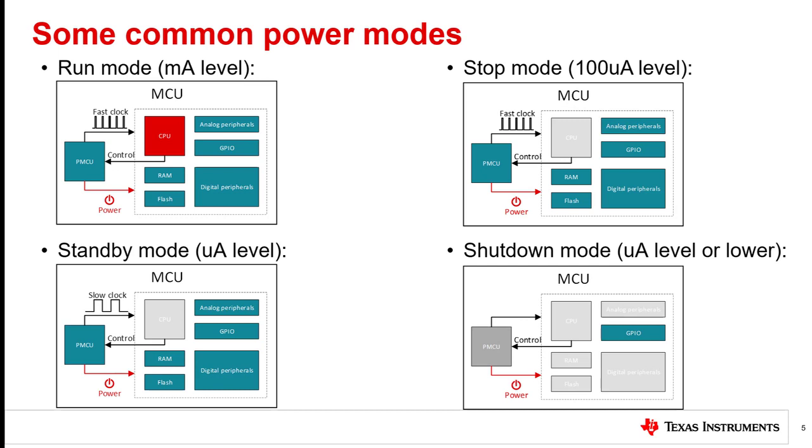Finally, in shutdown mode, typically only the GPIO peripheral is available, which can be used to wake the system up. Usually in shutdown mode, all other peripherals and internal clocks are disabled. Only a small part of the PMCU will be maintained to support powering the GPIO. Current in this mode will usually be a single microamp or lower.